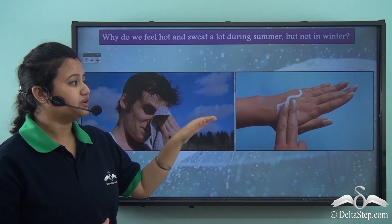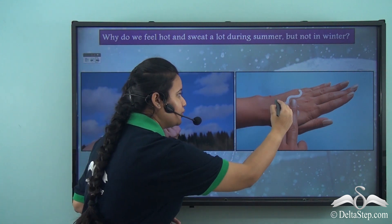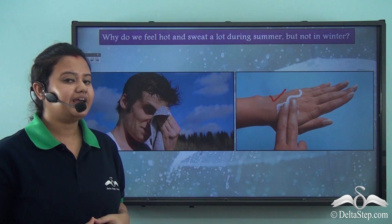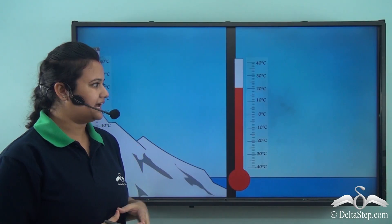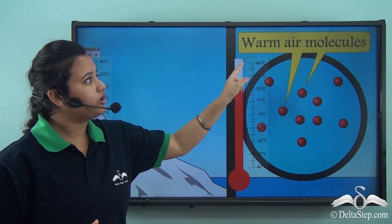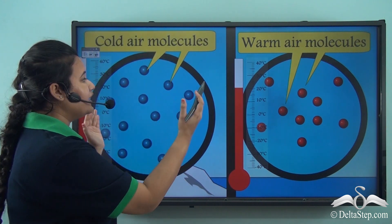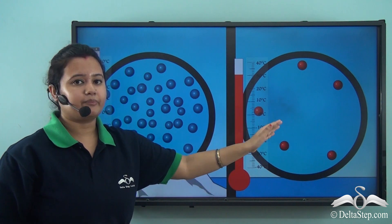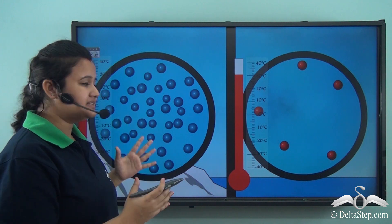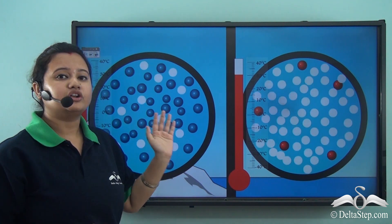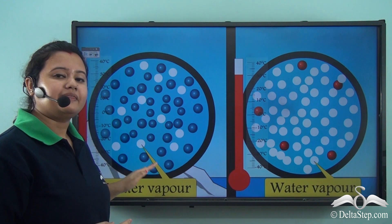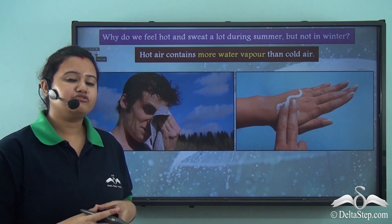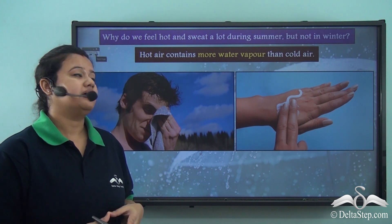During summer we feel hot and sticky, and in winter our skin becomes dry and we need to apply moisturizer. The reason is that as temperature rises, air expands, so warm air is less dense. As temperature drops, air contracts, so cold air is compact and dense. Since warm air is less dense, its moisture-holding capacity is more, whereas cold air is compact so its moisture-holding capacity is less.